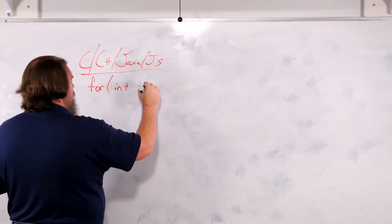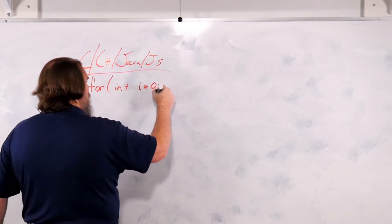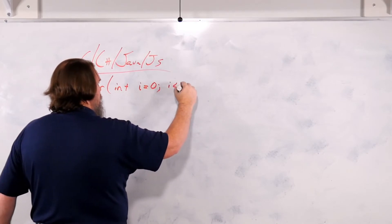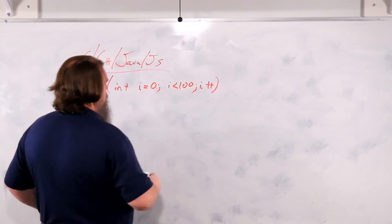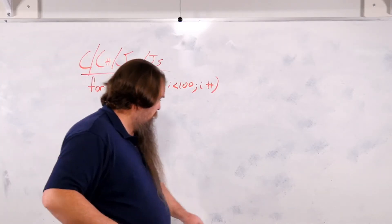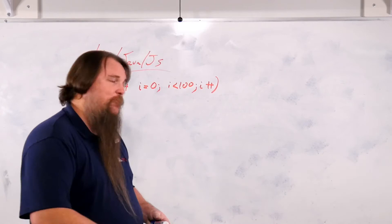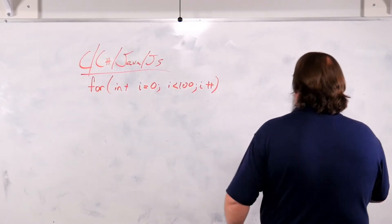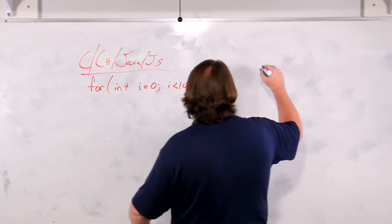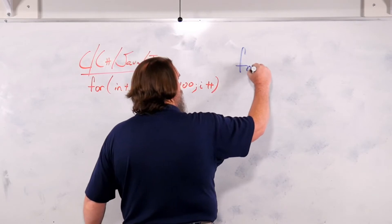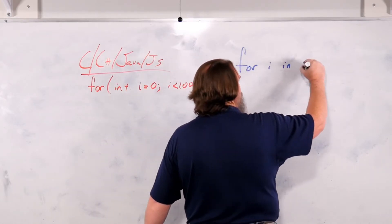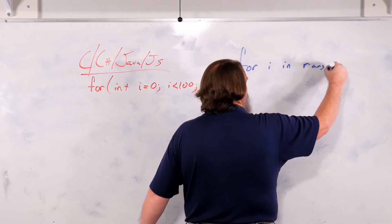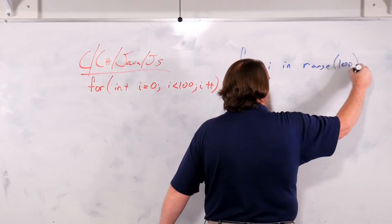For int i equals 0 i less than 100 i++. All right, that's the loop that we're going to do. But now we're going to do it in Python. In Python, we're going to write it like this, for i in range 100.